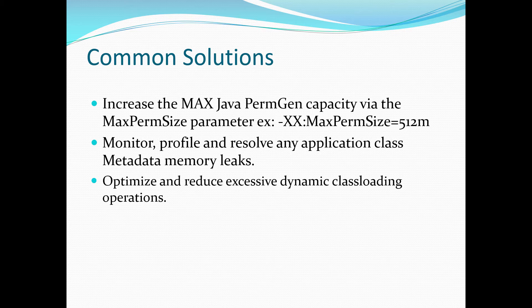More and more I'm seeing close to one gigabyte, but 512 is still a good starting point. Make sure you also monitor, profile, and resolve any application class metadata memory leak. Even if you increase capacity to 512 MB, if you're dealing with a leak, the PermGen will keep growing day after day. Please profile your app and resolve any potential class loader memory leak — this is not a trivial task but it's very important. This type of issue can arise not just from your code but also from third-party APIs you're using. If dealing with excessive class loading, optimize your code, identify the culprit code doing excessive class loading, and minimize the impact on the class loader.